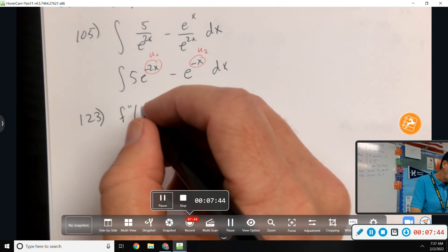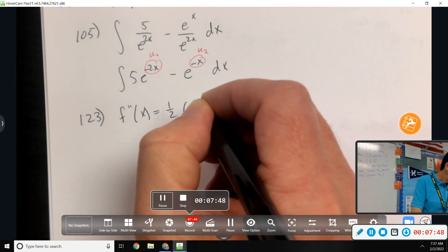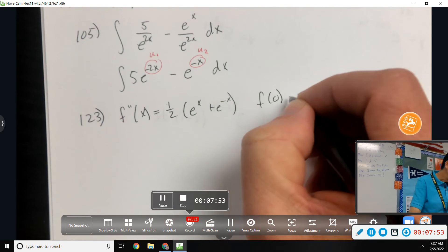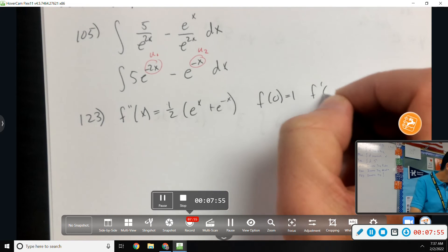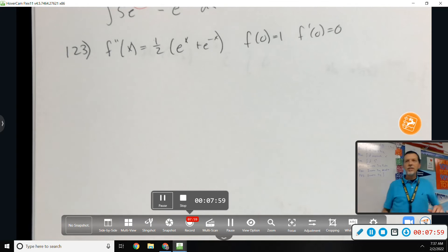Problem 123. The second derivative is equal to 1 half e to the x plus e to the negative x. f of 0 is 1, f prime of 0 is 0. We've done a couple of these. These have been on both of the most recent tests. Integrate, use the conditions. Integrate again, use the conditions. Those are going to keep showing up.